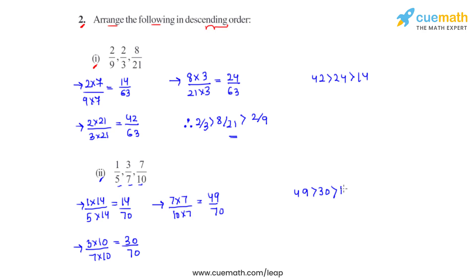Since 49 is greater than 30, and 30 is greater than 14, we can say that among the three fractions given, 7 over 10 is greater than 3 over 7, which is greater than 1 over 5. This is how we can arrange a given set of fractions into descending order.